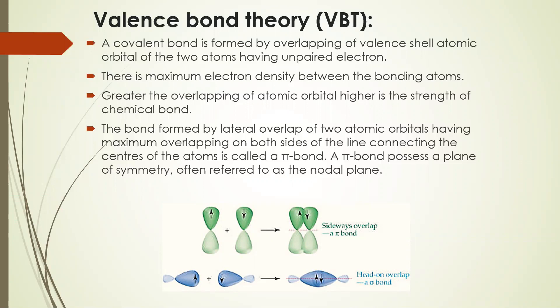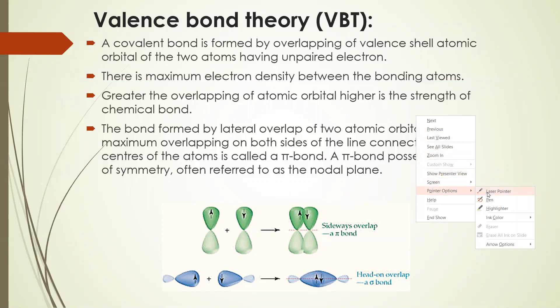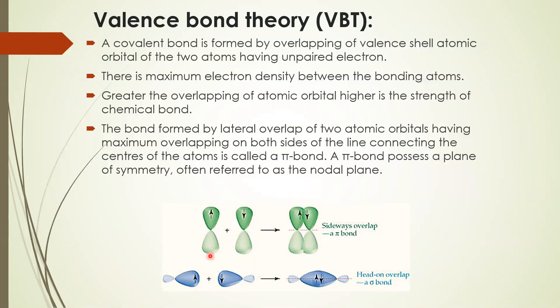Lateral overlap of two atomic orbitals having maximum overlapping on both sides of the line connecting the center of the atoms is called the pi bond. A pi bond possesses a plane of symmetry, often referred to as a nodal plane. The lateral overlap example is given here — this pi bond has side-to-side overlap, which is known as the lateral side. And here we have head-to-head overlap for the sigma bond.